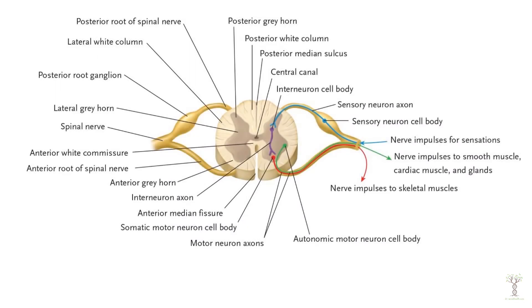The white matter contains white matter tracts that carry information to the brain. The inside butterfly shape is our gray matter — at different levels of the spinal cord, like cervical versus thoracic versus lumbar, this shape may be slightly different, but generally it has this butterfly shape. There's a central canal which allows cerebrospinal fluid to move through the entire spinal cord, and these are the white tracts, sometimes called white columns. The top of the diagram is the posterior or dorsal side, and the front is the anterior or ventral side.